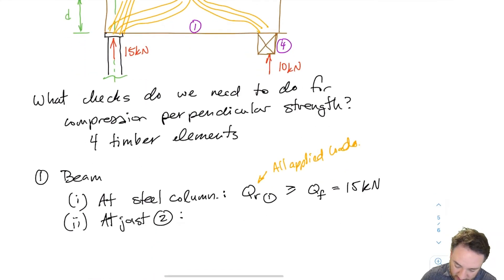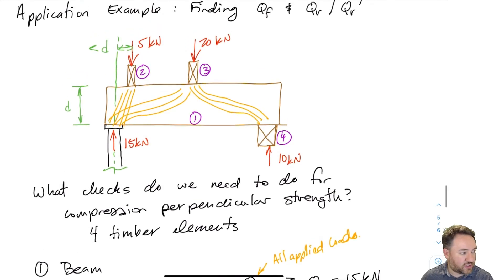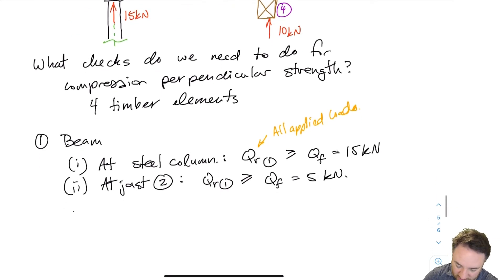So that's going to be qr. I'm putting a little one here just to indicate that it's the resistance of beam one, beam number one. So it's the strength of beam number one that's going to come into play in this qr. And for this one, the qf is the load of the joist onto the beam, which is pretty straightforward. Joist number two is applying five kilonewtons to the beam. So the beam must have a resistance of at least five kilonewtons to that load.